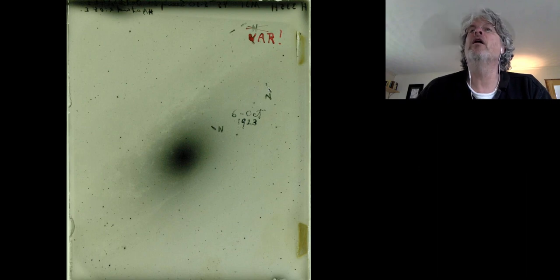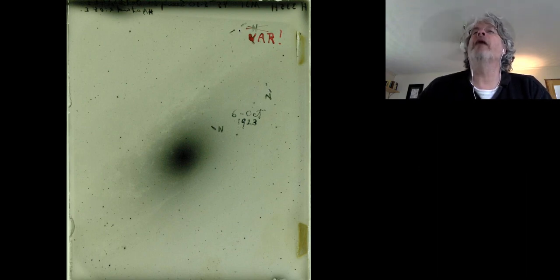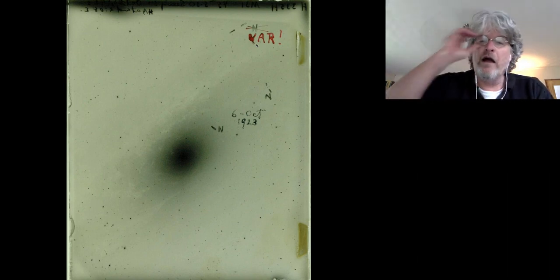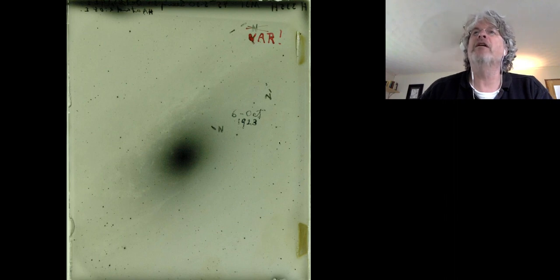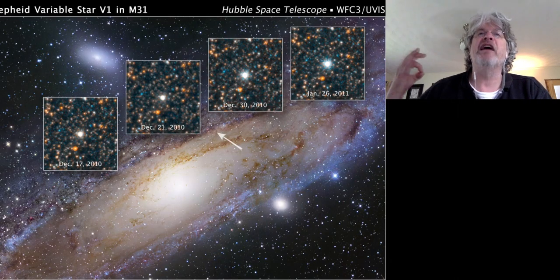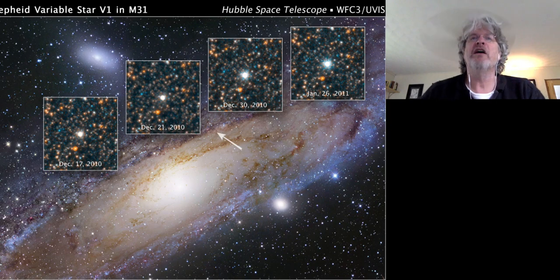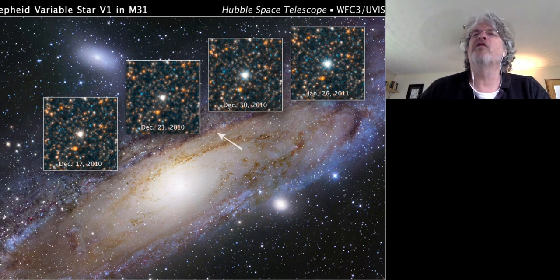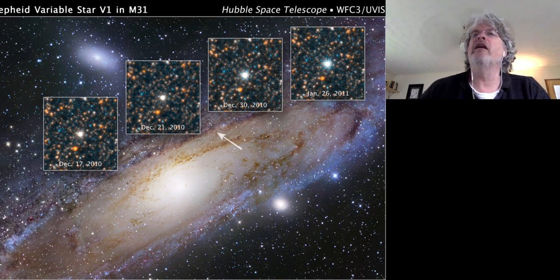After a couple weeks of observing, he realized this actually wasn't a nova that was changing brightness. This is actually a variable star, a Cepheid variable star. He found them in Andromeda. This is a few exposures of different dates of a Cepheid variable in Andromeda.